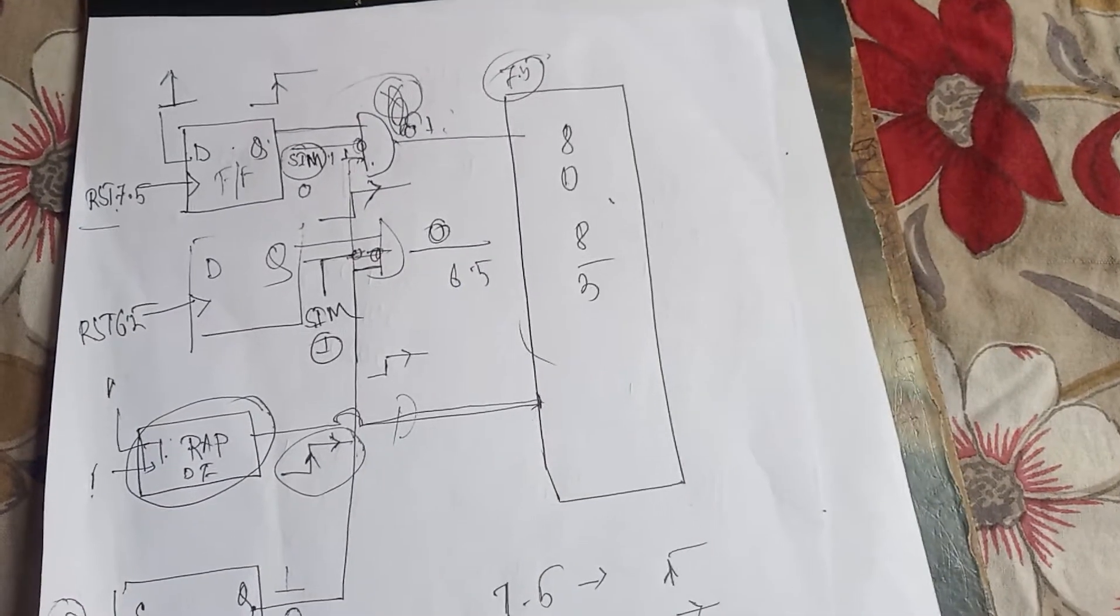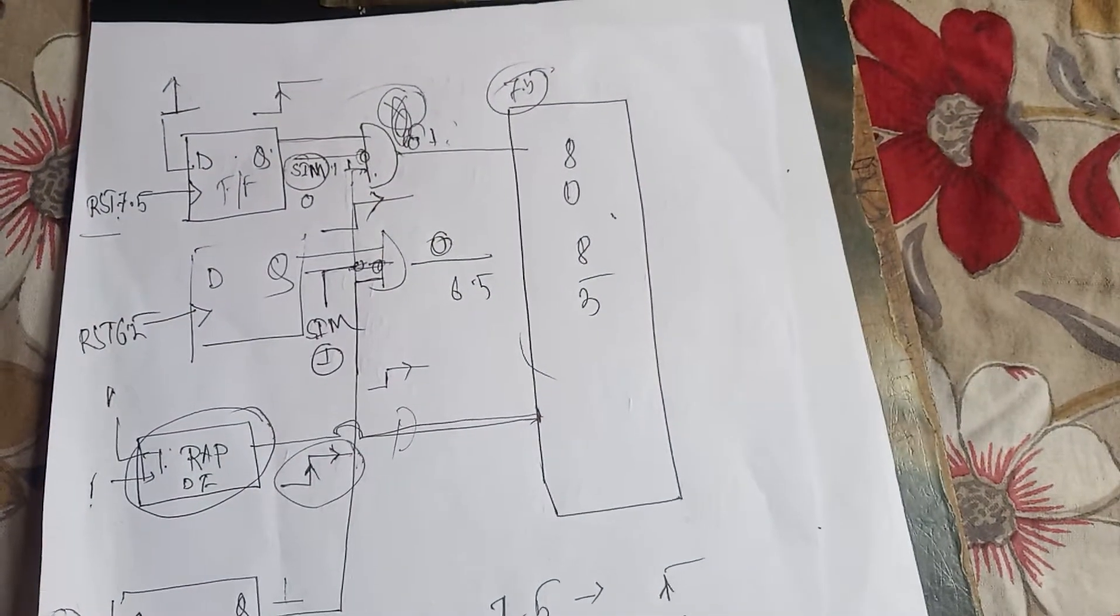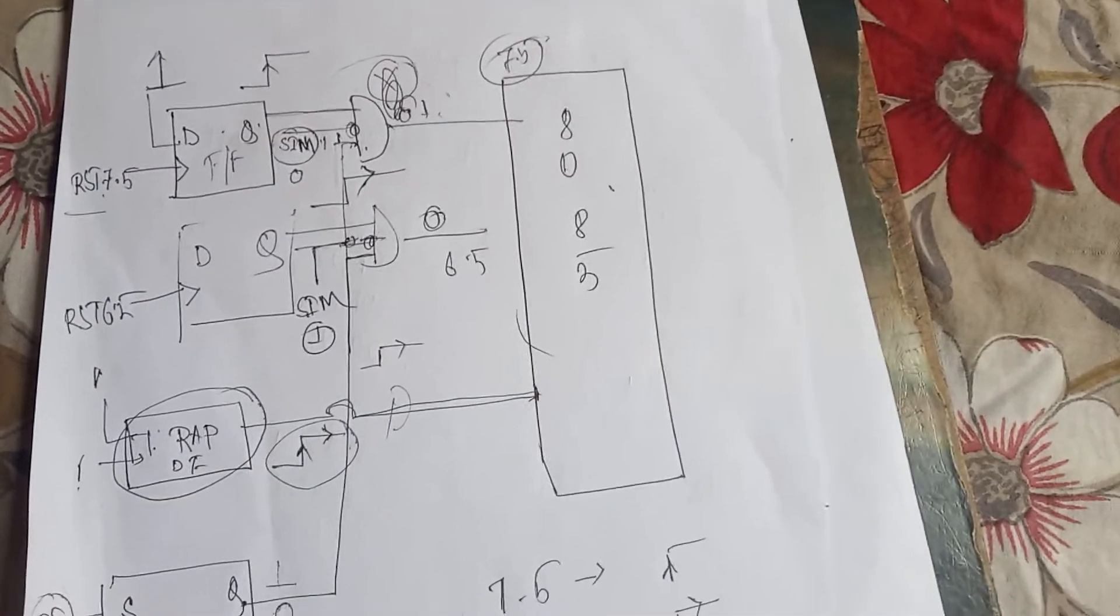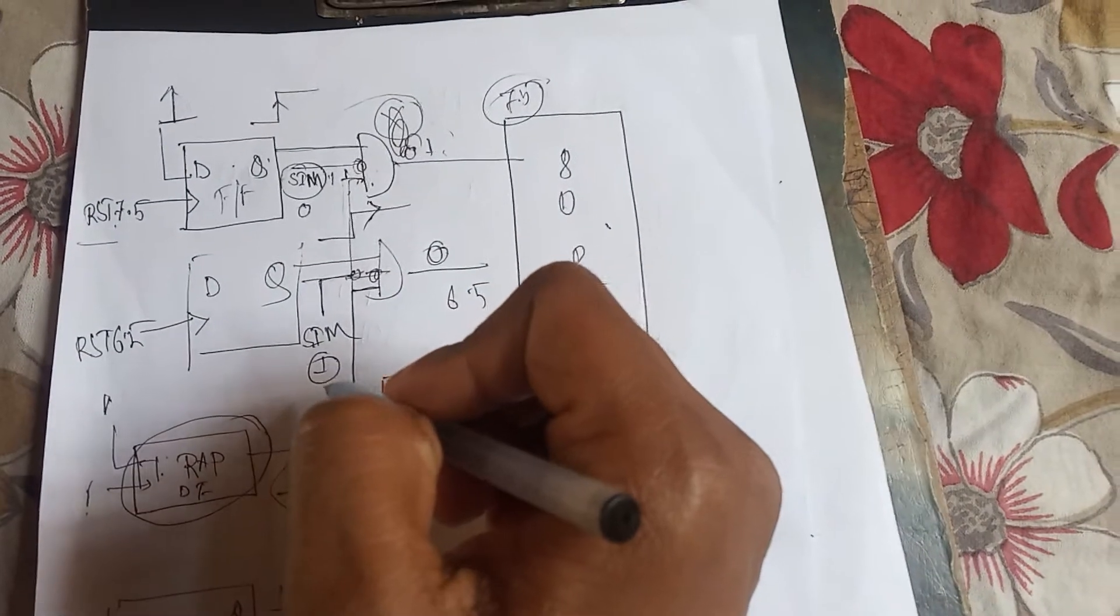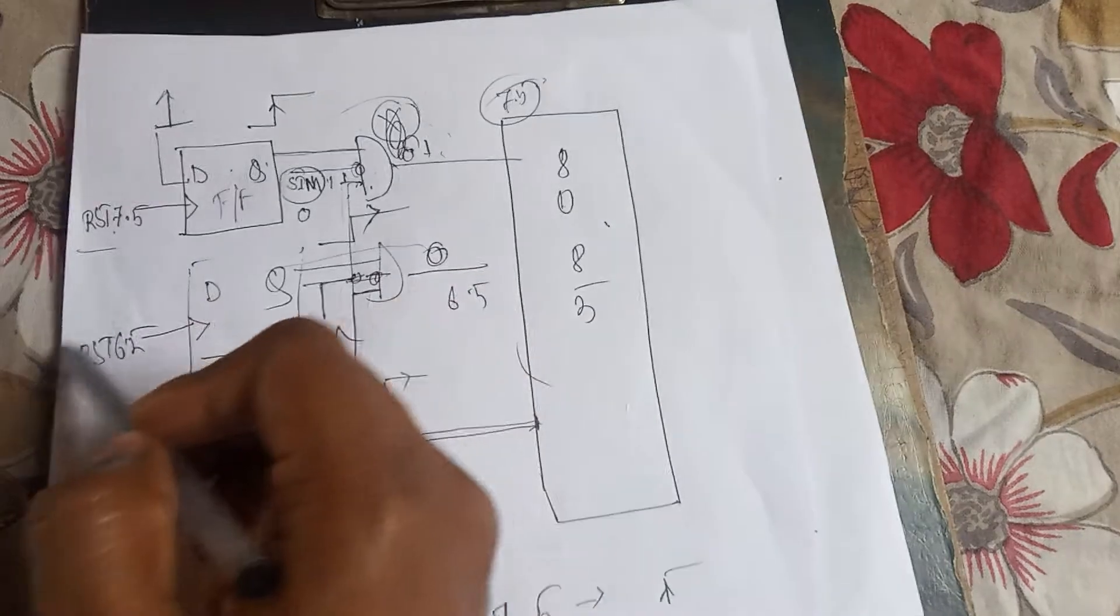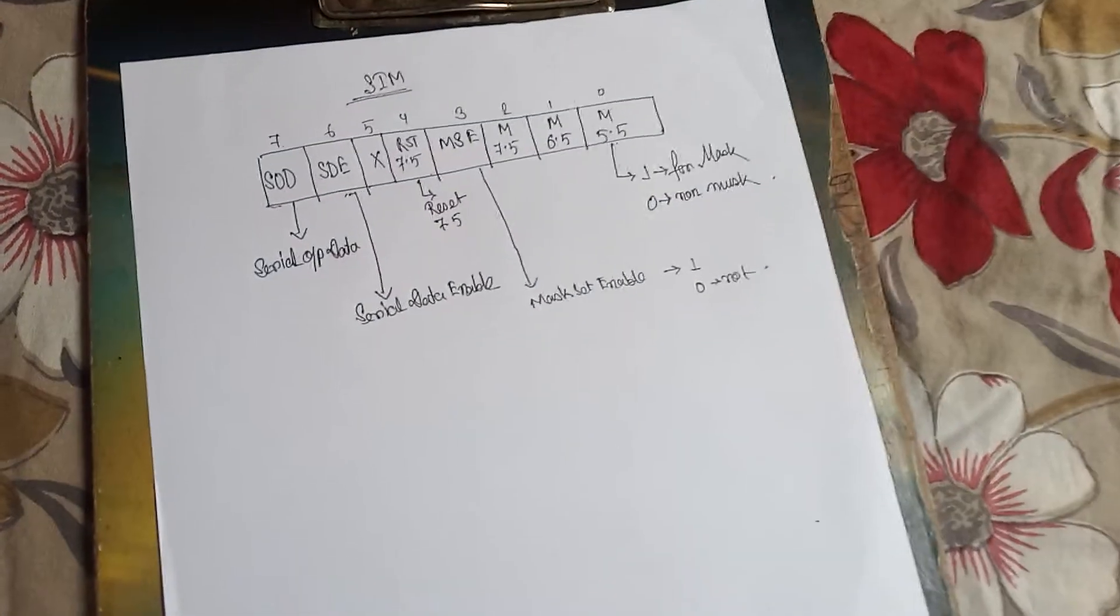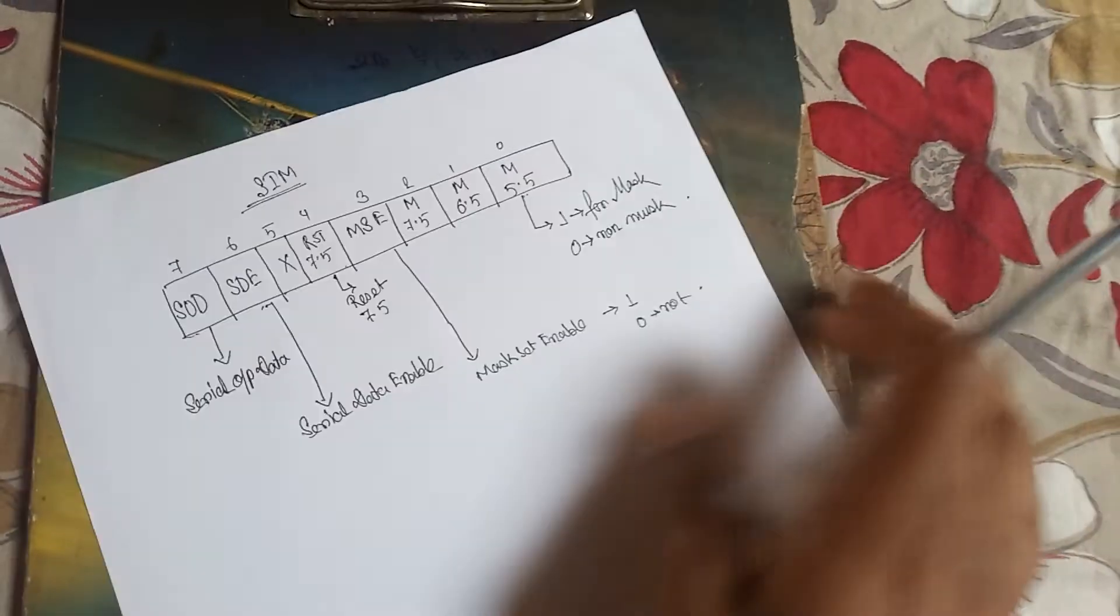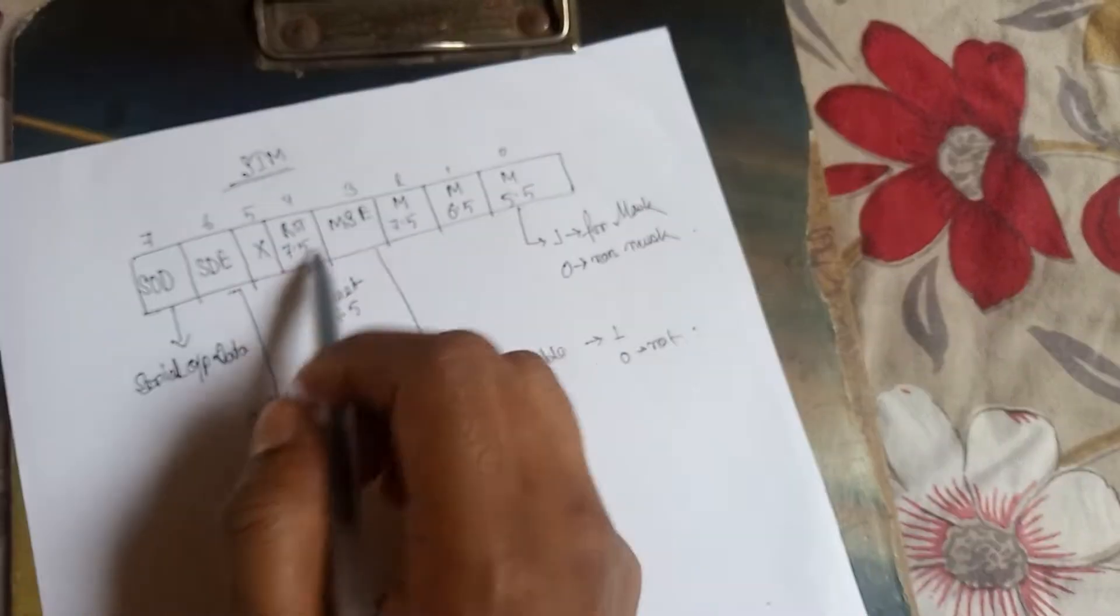Both are come together. They come parallel together, but only one interrupt can work at a time, so we have to mask one interrupt. According to the priority, the RST 6.5 will mask. So this mask is done by the SIM instruction.